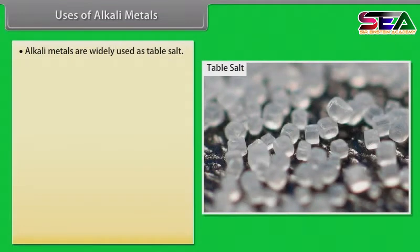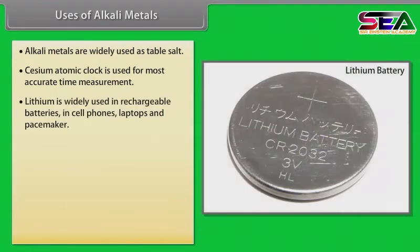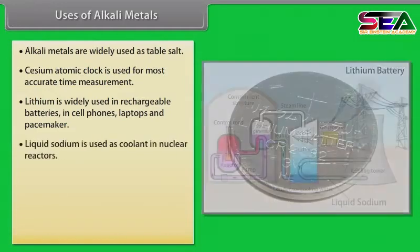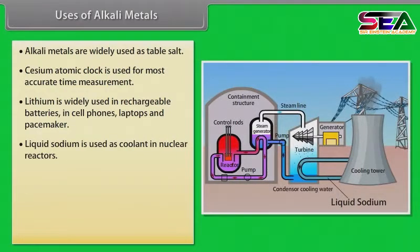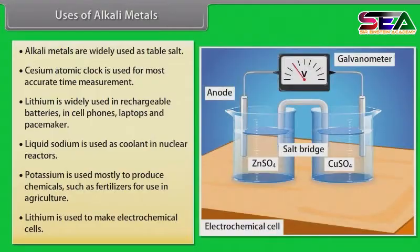Alkali metals are widely used as stable salts. The cesium atomic clock is used for most accurate time measurement. Lithium is widely used in rechargeable batteries in cell phones, laptops and pacemakers. Liquid sodium is used as coolant in nuclear reactors. Potassium is used mostly to produce chemicals such as fertilizers for use in agriculture. Lithium is also used to make electrochemical cells.